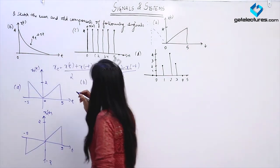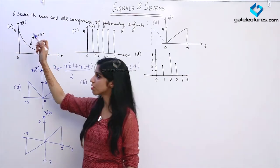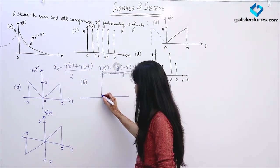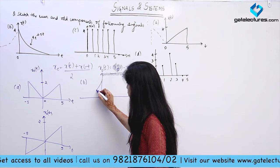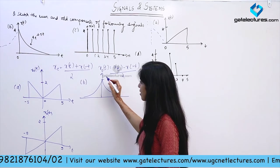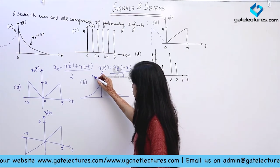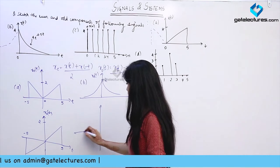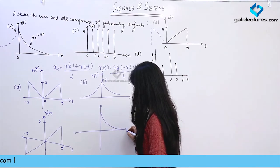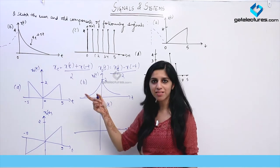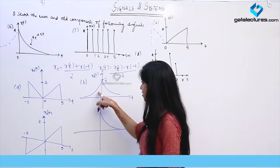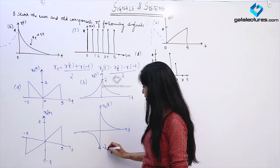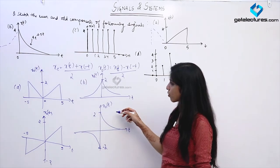We perform the second part similarly. This is the original signal; if I just reverse it in time it looks like this. When I sketch its even part, I obtain a signal like this — initially the value is 4, this becomes 2. This is the even part of the signal. And when I sketch its odd part, the original signal remains as it is; when you subtract its time-reversed signal, I obtain something like this. This value is minus 2 and this is plus 2. This is the odd part of that signal.